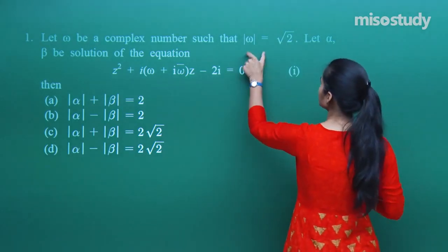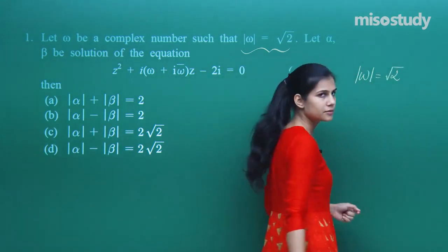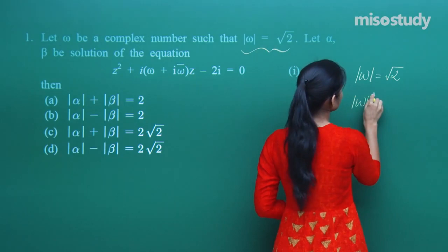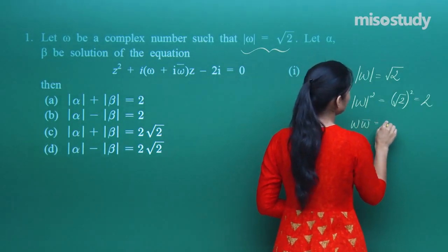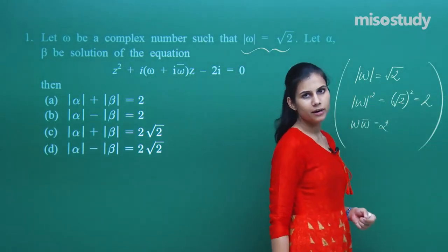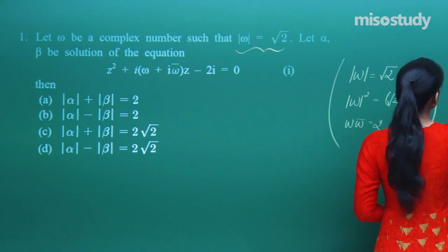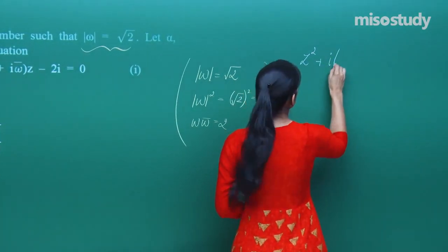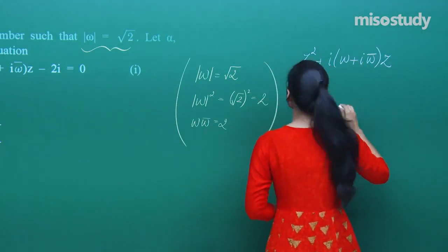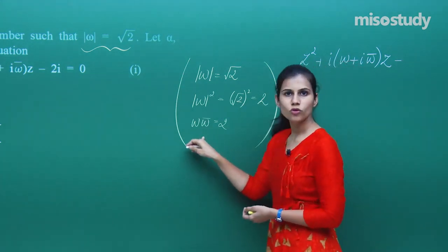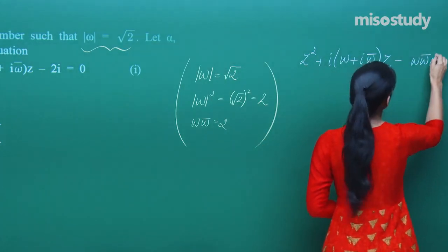If mod omega is root 2, then mod omega squared will be root 2 squared, which is 2. Mod omega squared is nothing but omega times omega bar. So you have omega omega bar equals 2. Now consider the equation z squared plus iota omega plus iota omega bar times z minus 2 iota. The 2 can be replaced by omega omega bar, so 2 is replaced by omega omega bar times iota.